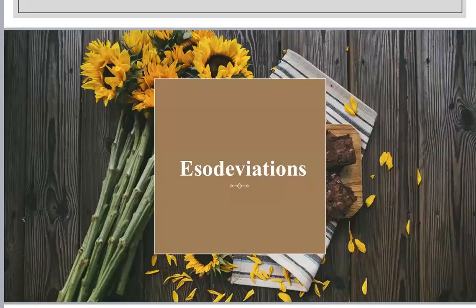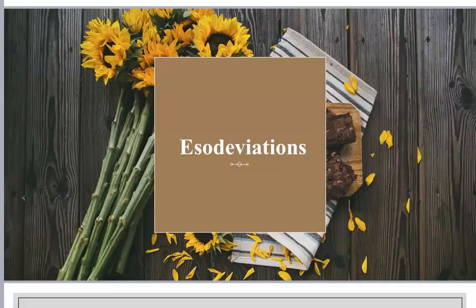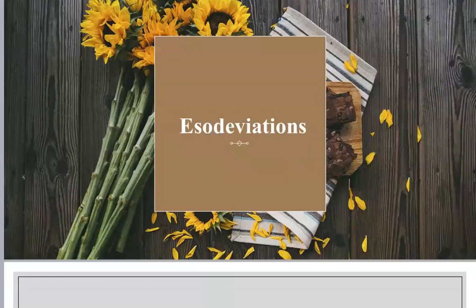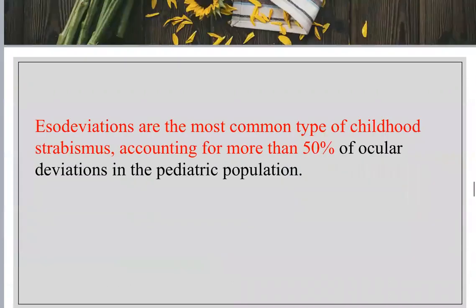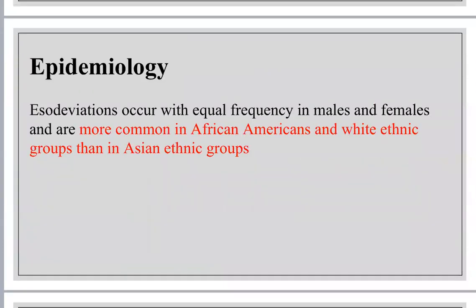Hello everyone. Let's complete the unfinished business about the strabismus revision. This is the third video. Let's talk about esodeviation. Near esodeviation is extremely important because it is the most common type of childhood strabismus, accounting for more than 50% of the total pediatric strabismus population.